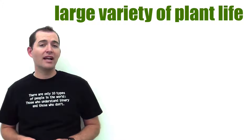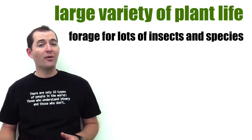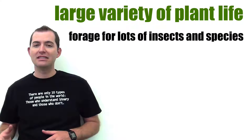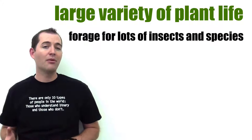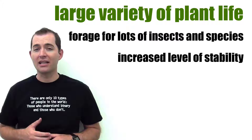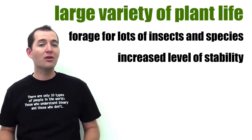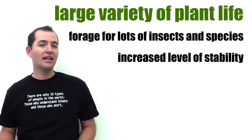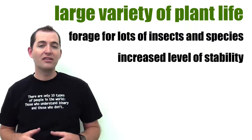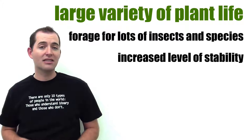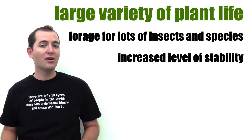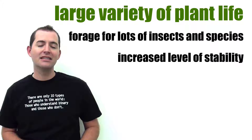A habitat with a large variety of plants should be able to provide forage to lots of different insects and species. This same habitat will have an increased level of stability because collectively they should be more likely to survive things such as drought or insect and disease outbreaks. This should have an impact on the entire ecosystem because if some plants are able to survive these events then the soil will be protected and will not be eroded as easily.